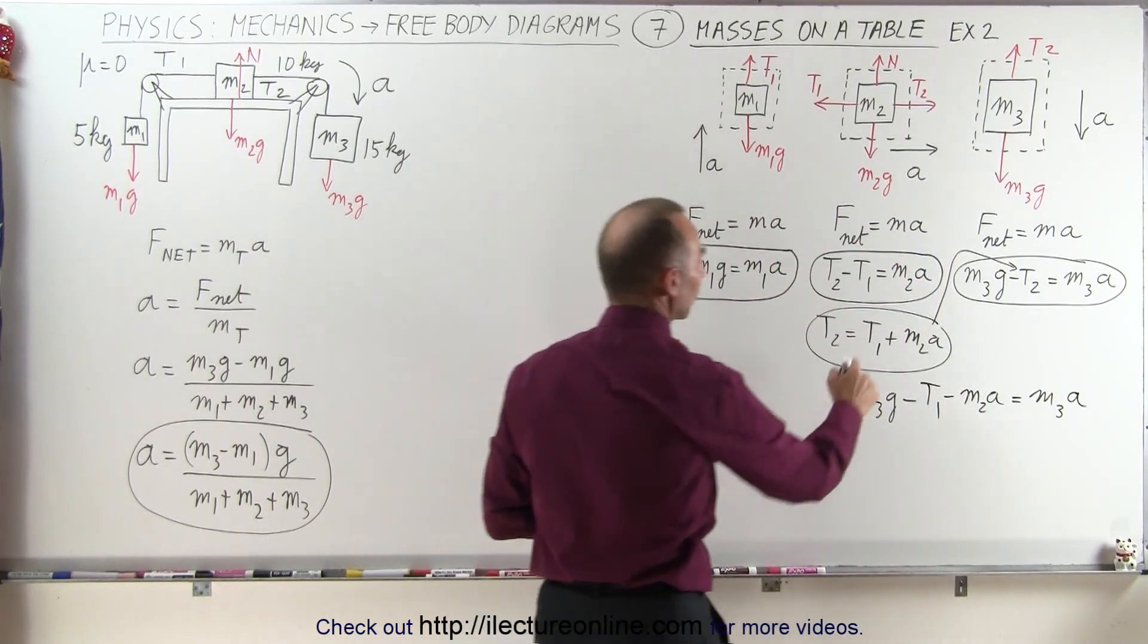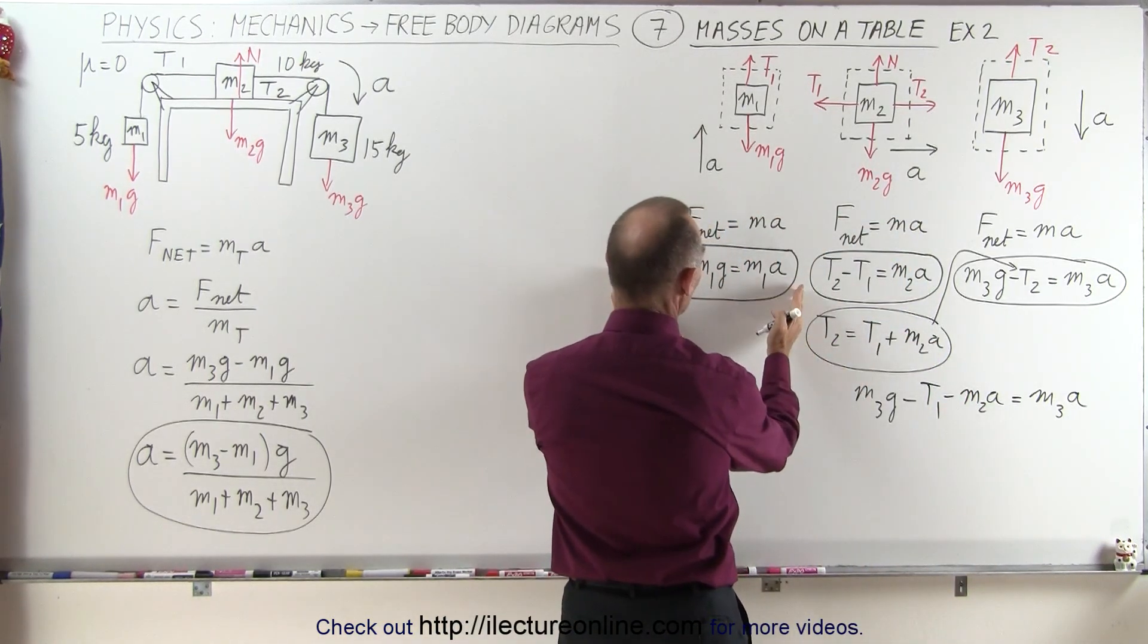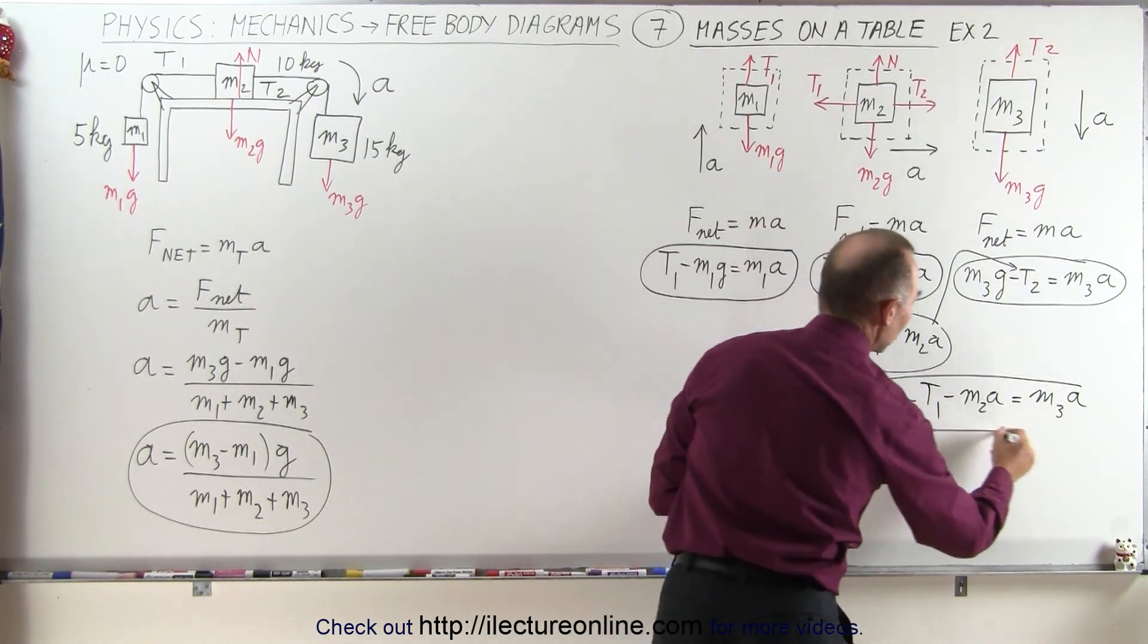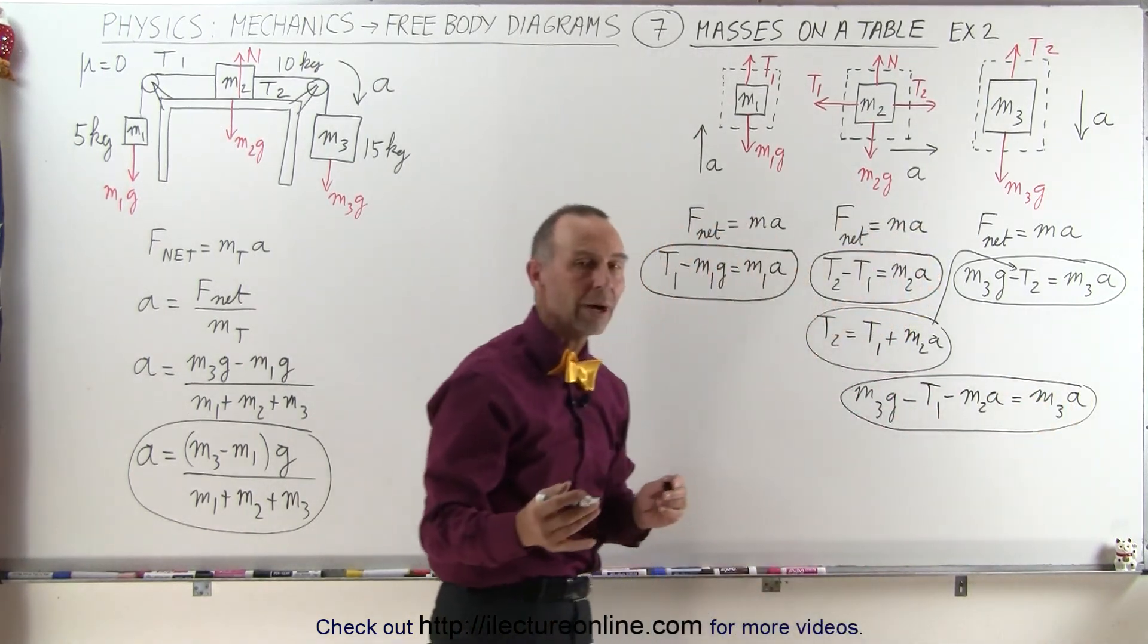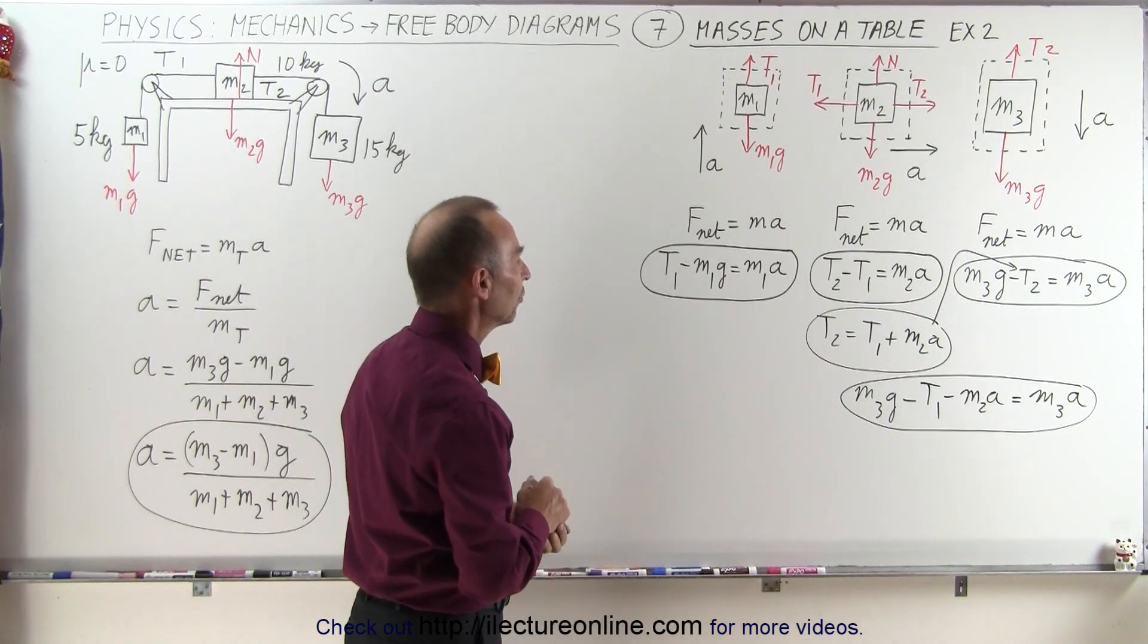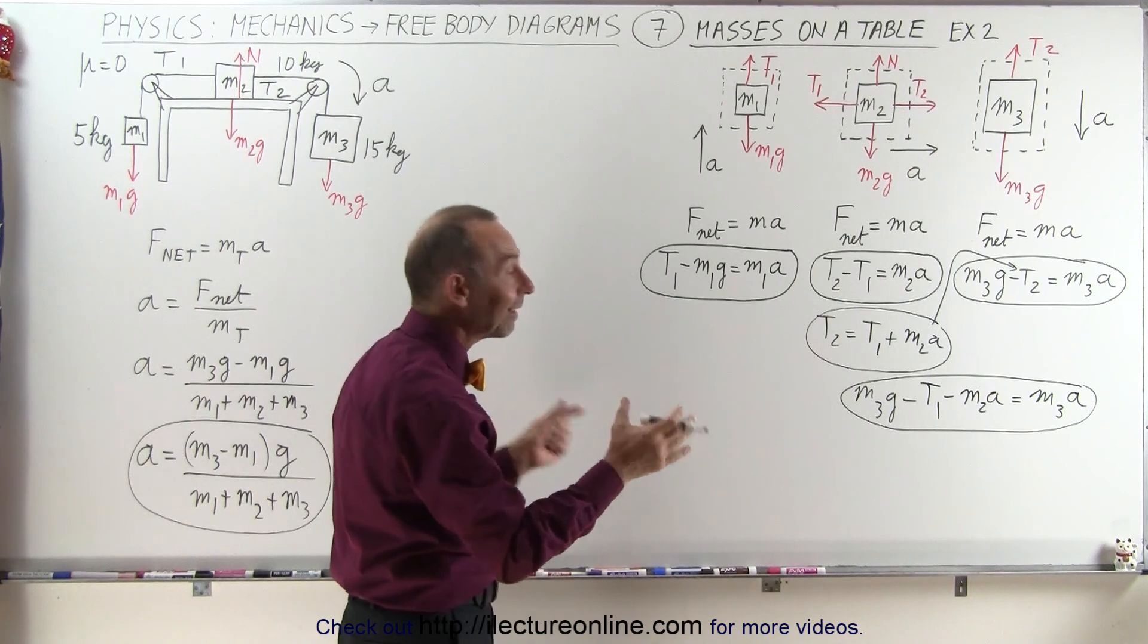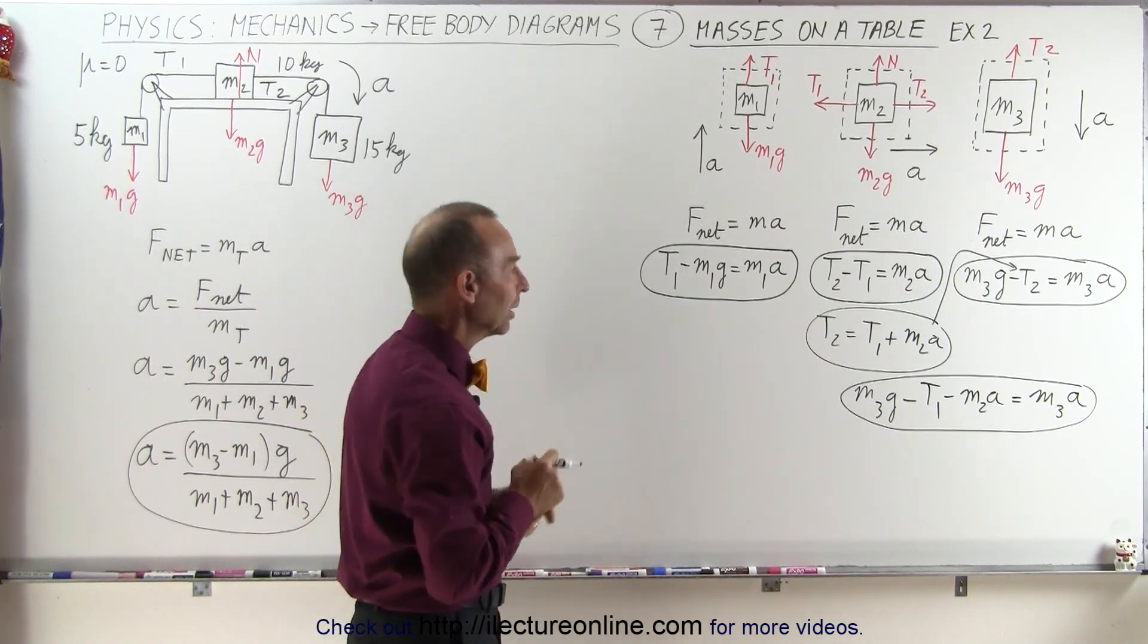So now we have two equations, so this equation now is gone, now we have this equation right here, this equation right here, and those two equations now only have two unknowns, t1 and a. So now we're going to solve each of those two equations simply for t1 and let's set those equal to each other like we did before.